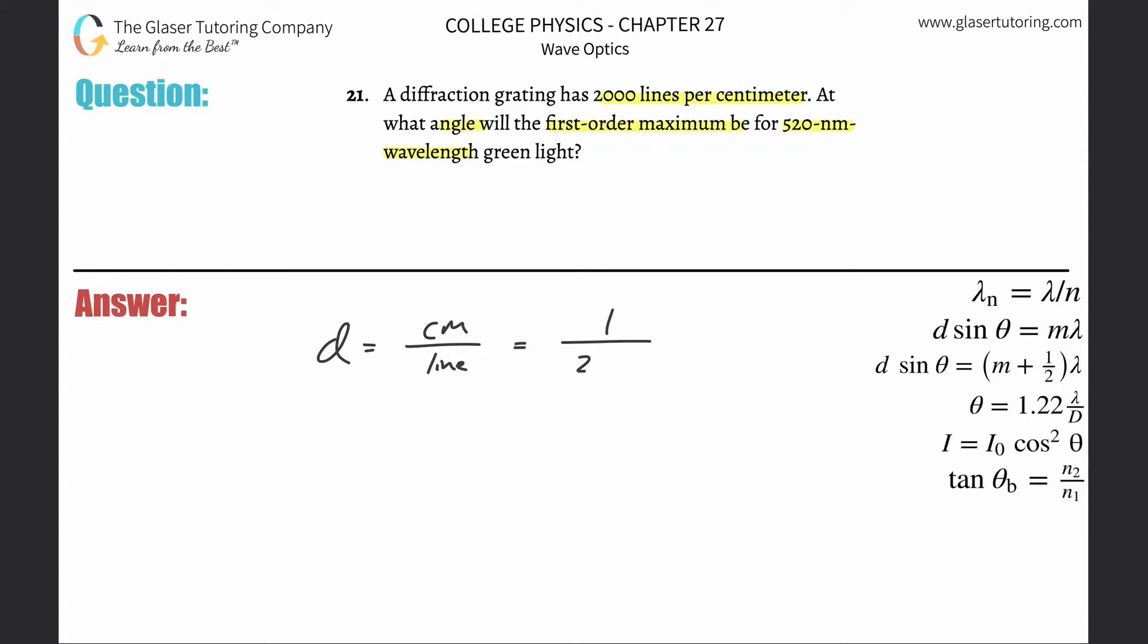I can simply take 1 divided by 2000, and that will come out to be 5 times 10 to the minus 4th. But you got to be careful, this is now centimeters. We need that in meters.